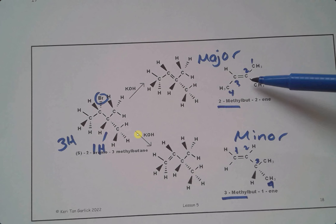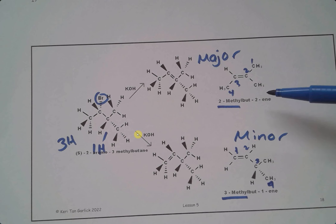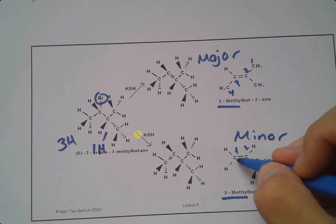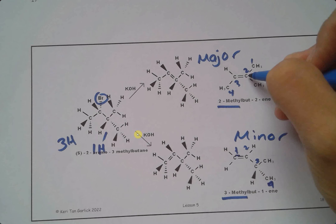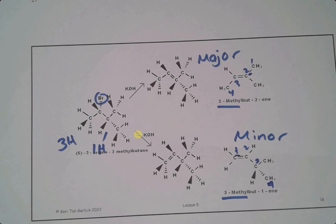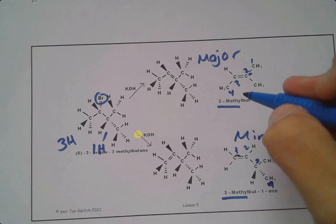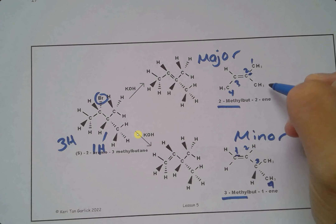The reason why the methyl position changes between products has to do with the numbering pattern — you number the chain so the double bond is on the lowest number possible. So in one case you number from one end to get double bond at position one, and in the other you number to get it at position two. You could number it the other way, but then your methyl would be on a higher-numbered carbon, which is not preferred. Watch out for those little things.